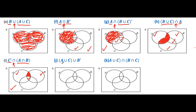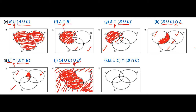Now A union C — take the bracket as a whole one element, meaning A and C. Now identify B complement, which means outside of B. These regions are outside of B. There is a union between them, so we shade both single tick and double tick. So this is our desired area.